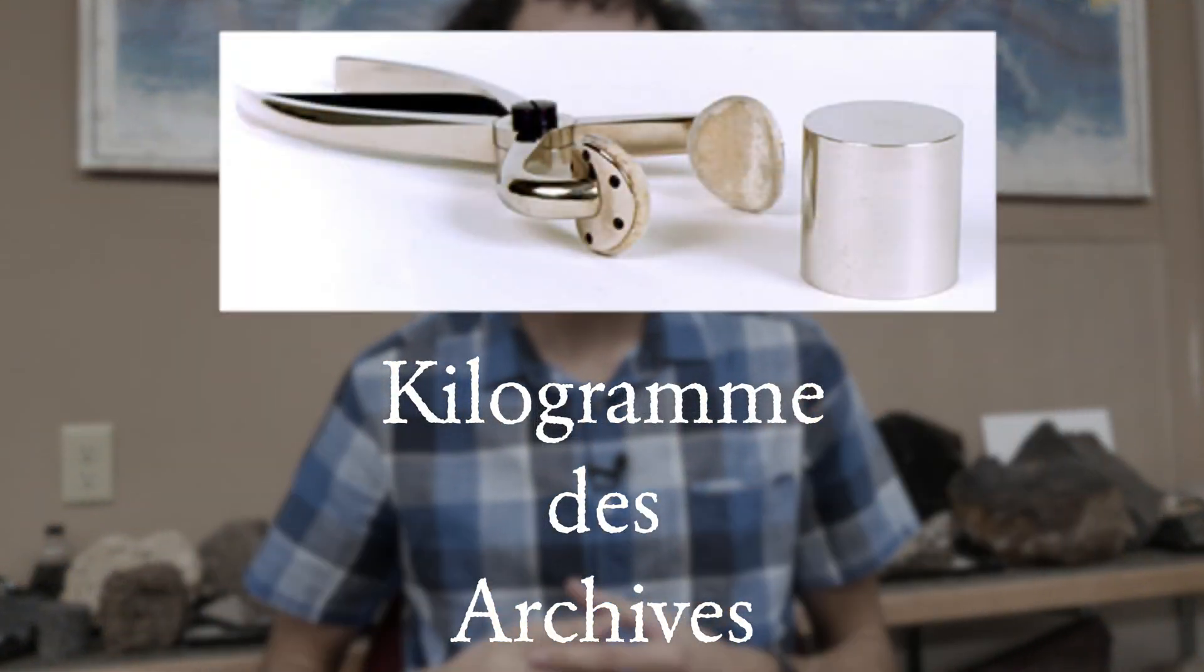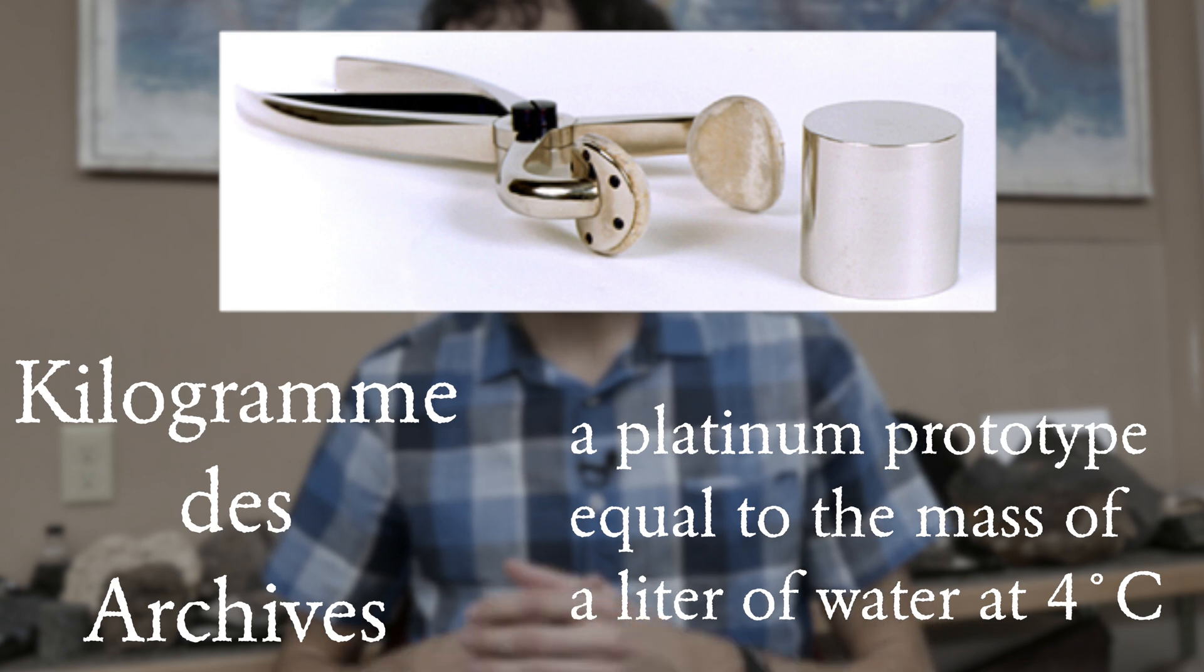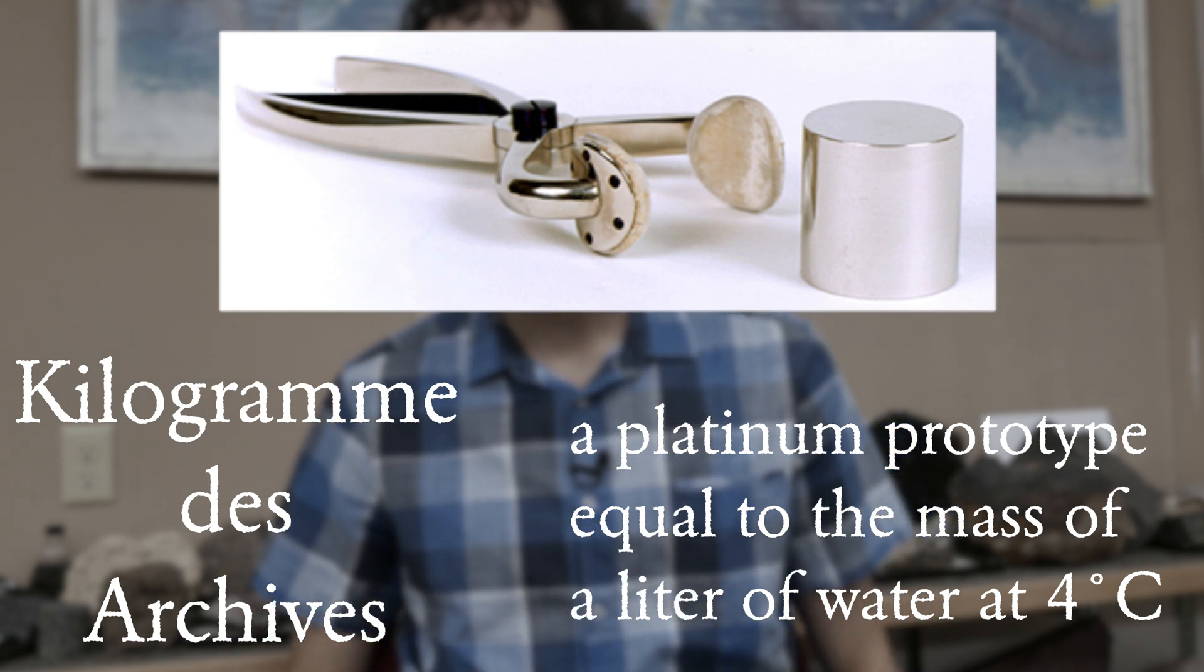Over the decade, they changed the name to the kilogram and created the Kilogram d'Archive, a platinum prototype that matched as closely as possible the mass of a liter of water at 4 degrees Celsius. 80 years later, they switched it out with a stabler mass standard, the International Prototype Kilogram.